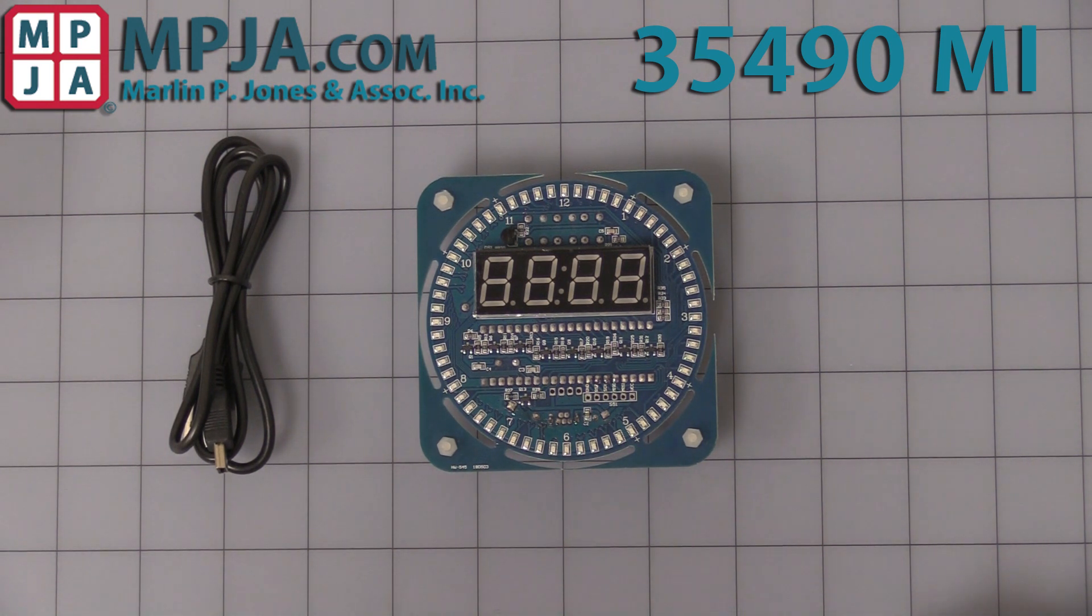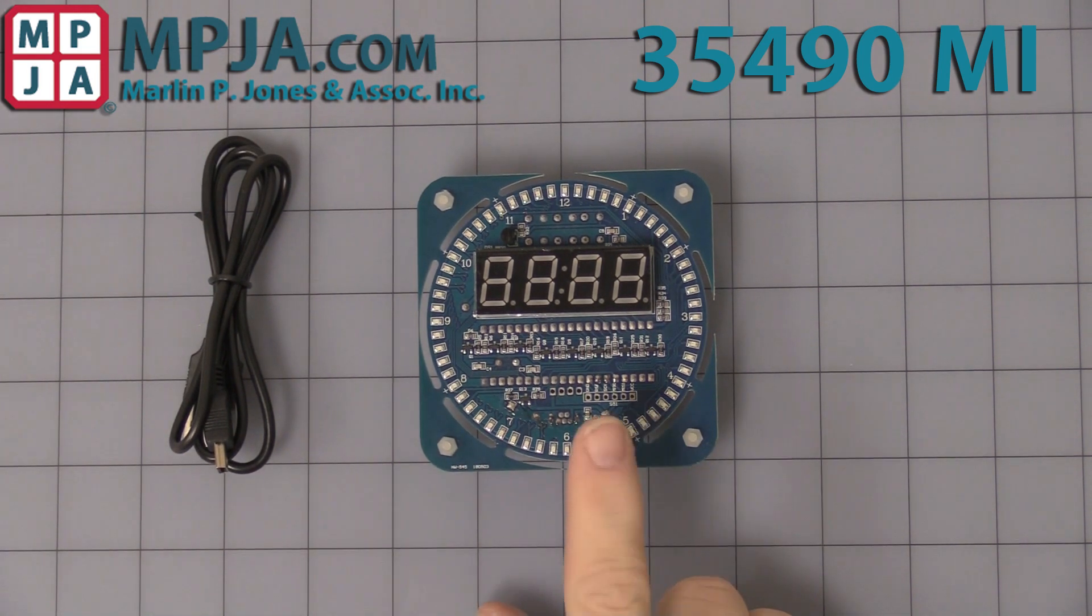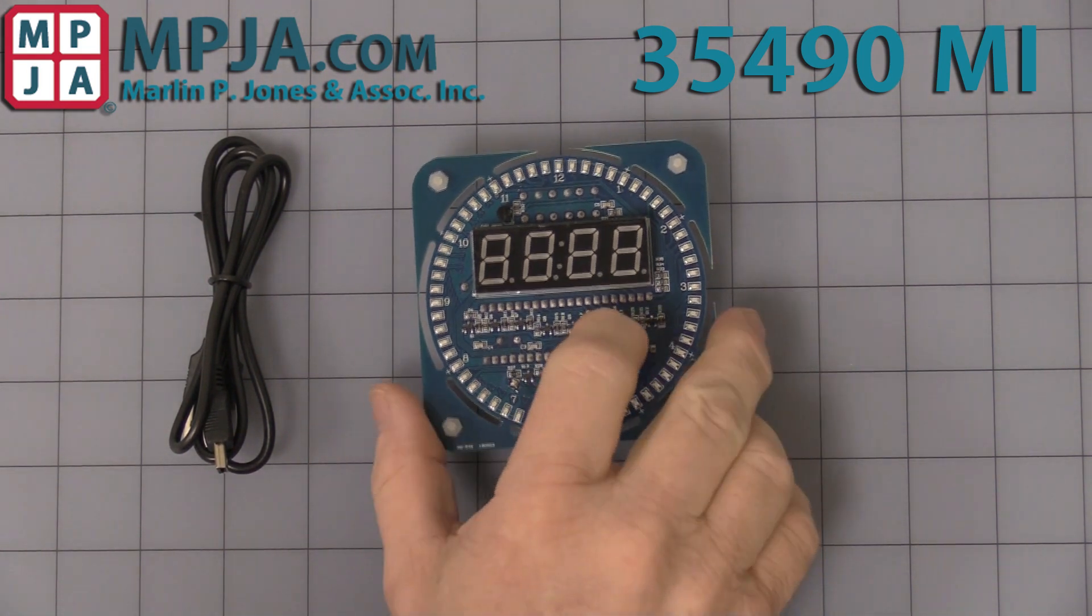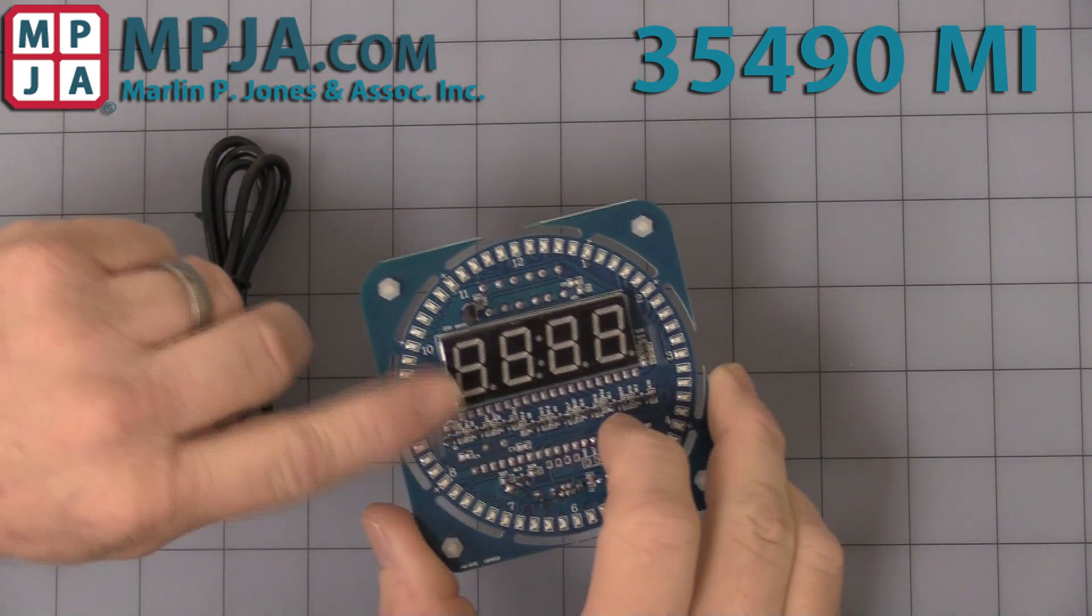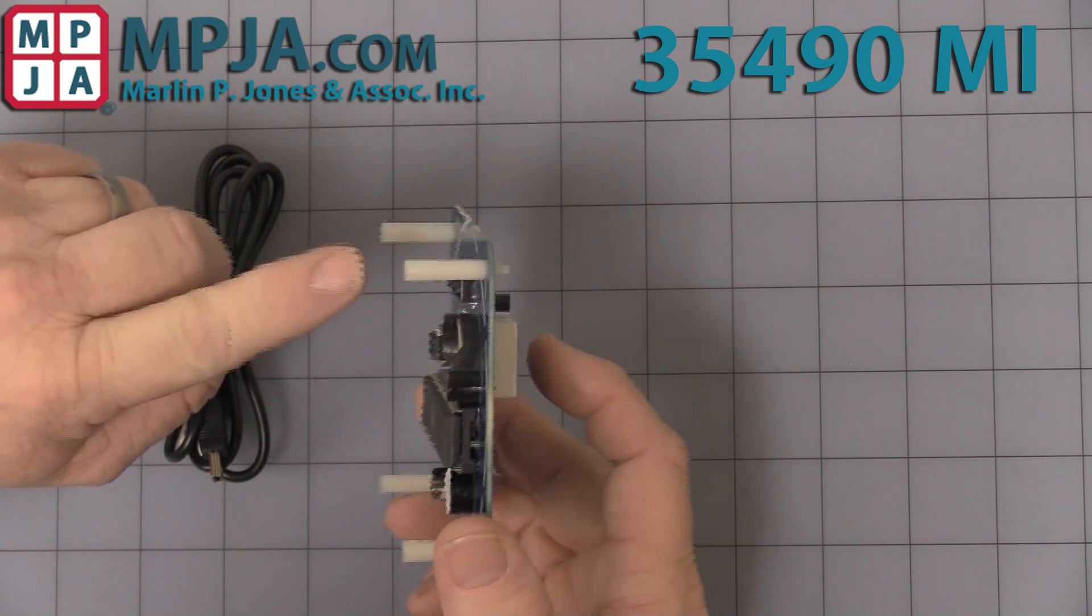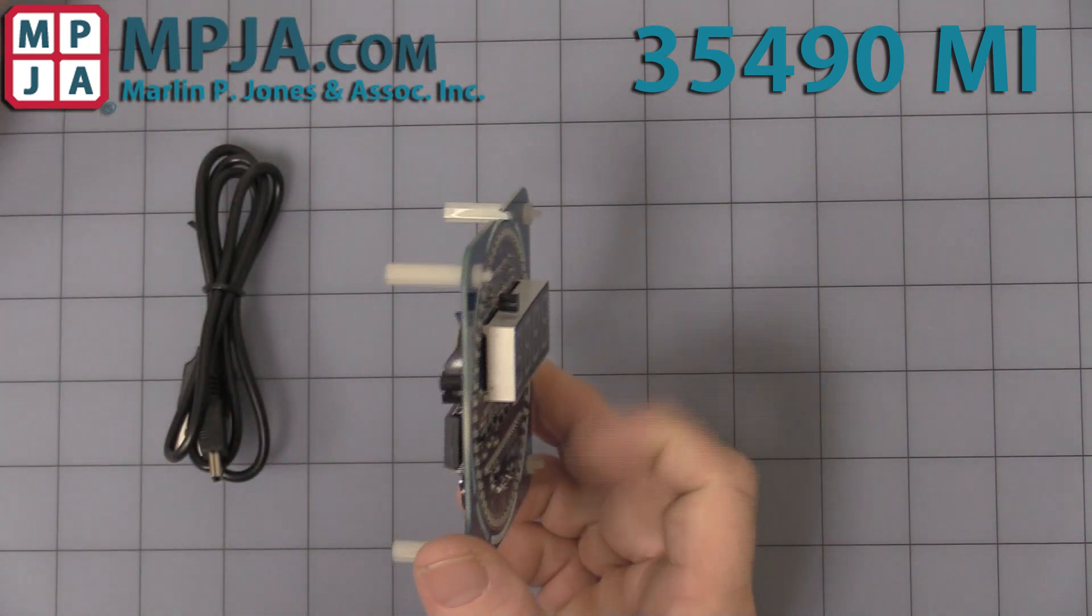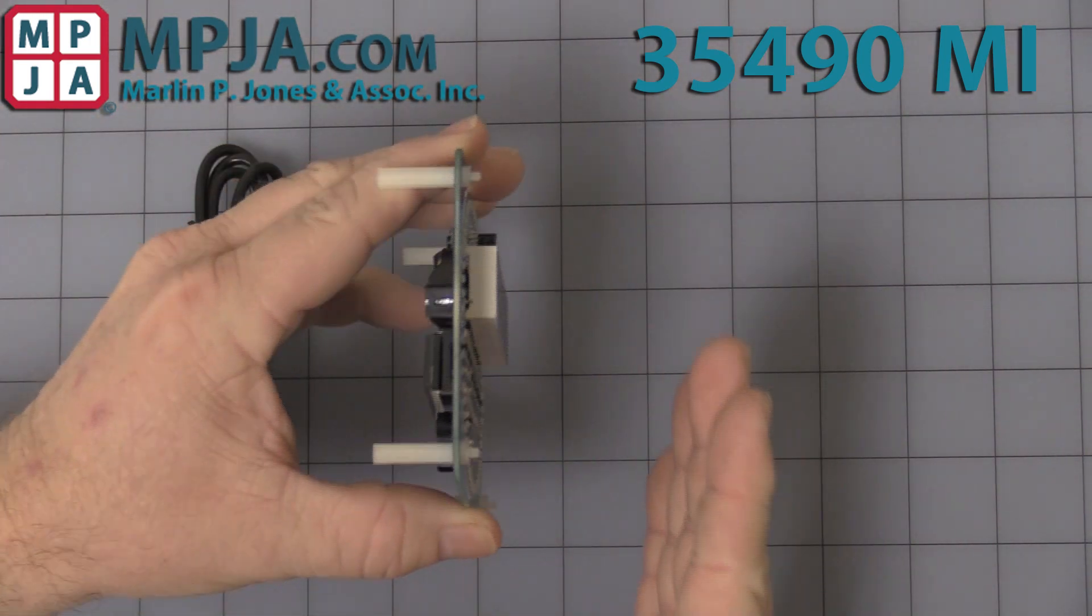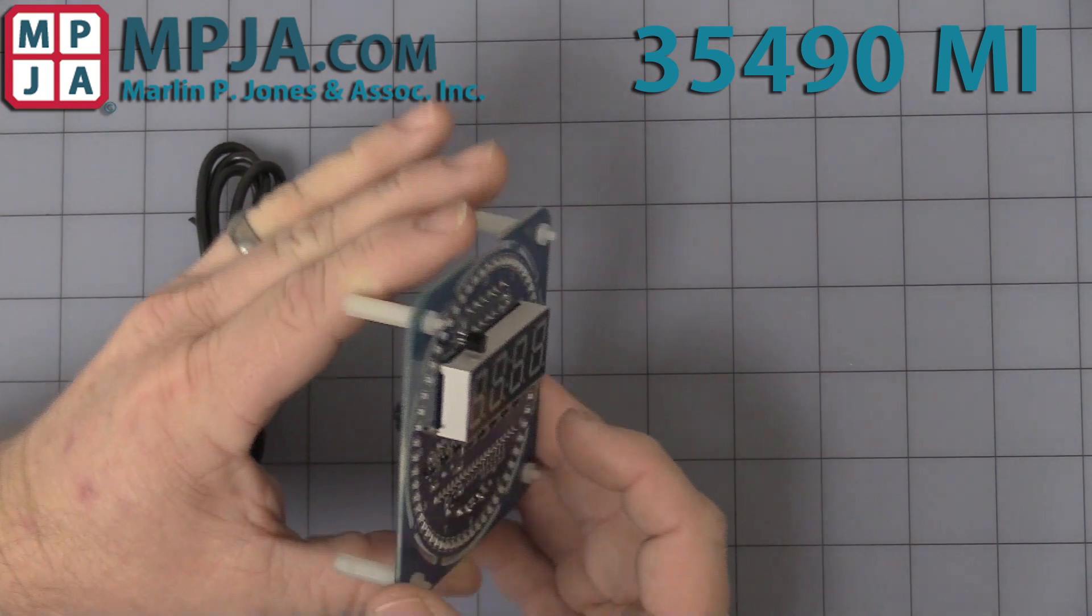Hello, today's video is on our stock number 35490 MI, a creative digital clock. It comes as a board level component with no box or enclosure, and includes four standoffs probably designed to mount to an enclosure face, but for demonstration I've mounted them to the back.